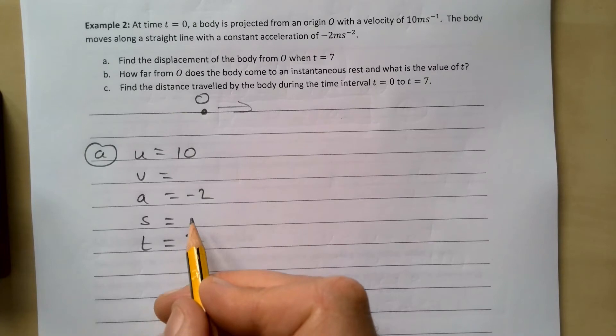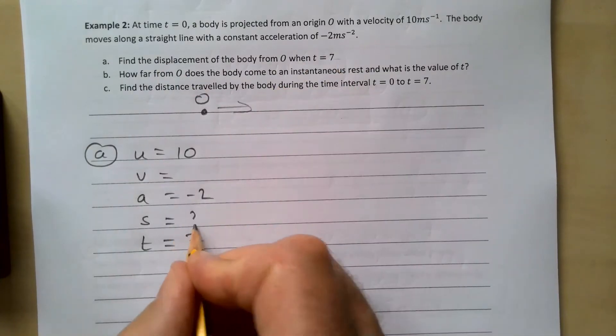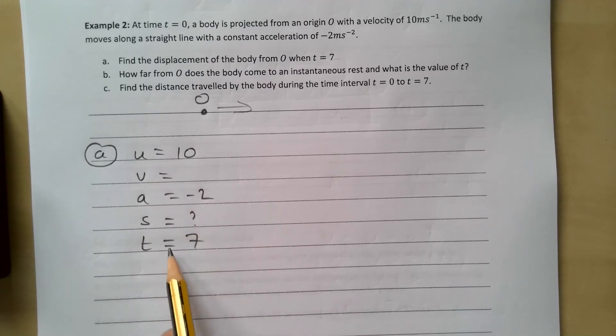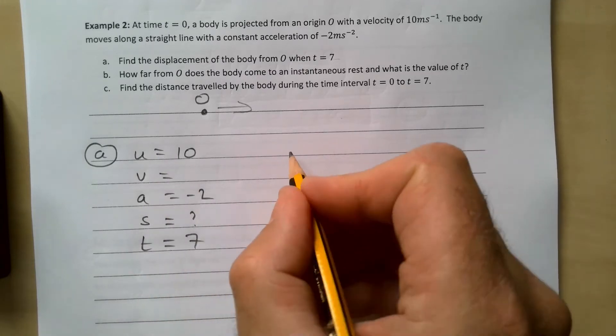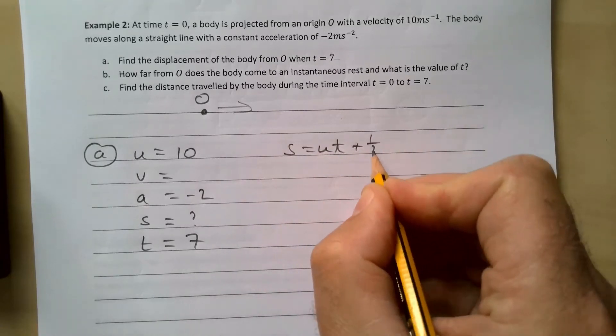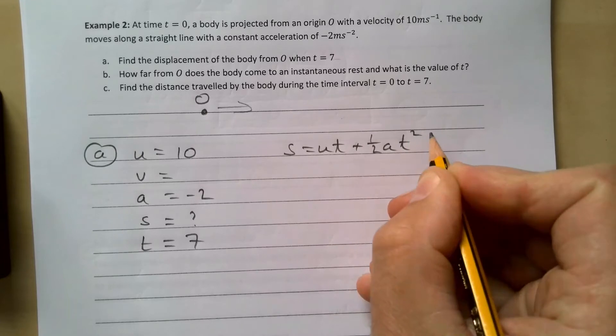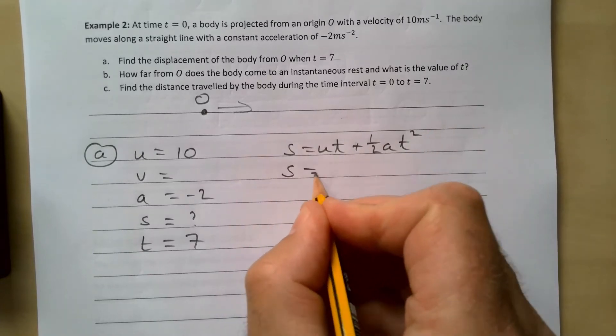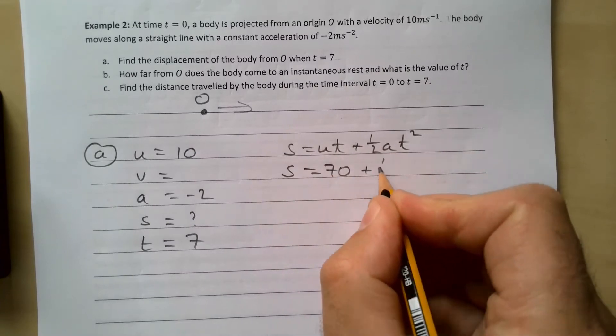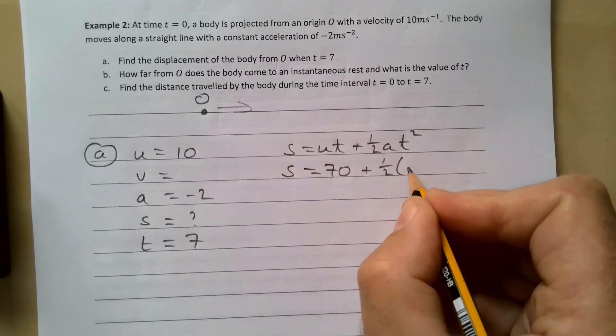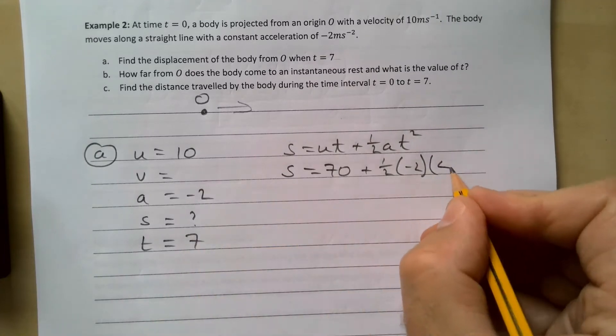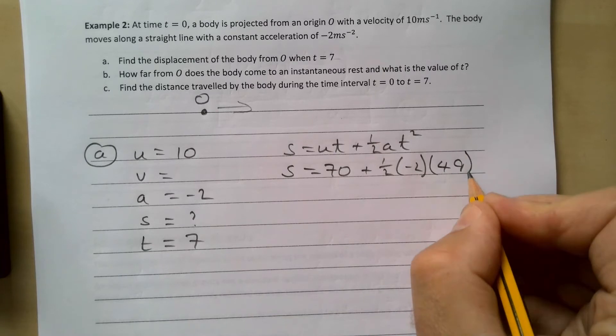So we are looking for displacement which is s. We have u, a, s, and t, and so we're going to use s equals ut plus a half of at squared. s equals 10 times seven, so it's 70 plus a half times minus two times t squared which is 49.